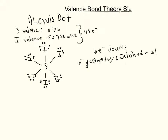With drawing the Lewis dot structure, we're going to have to put sulfur in the middle and all 6 iodides surrounding it. We notice that there are no lone pairs, so we don't have to worry about that. But sulfur is able to have 6 bonds surrounding it because sulfur has a d orbital available to it and does not follow the octet rule.